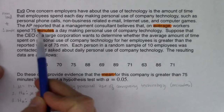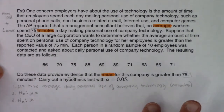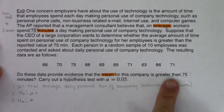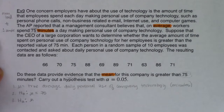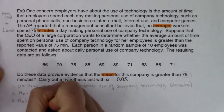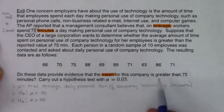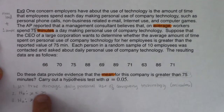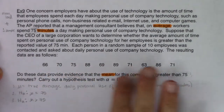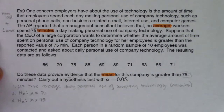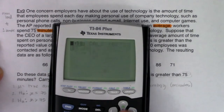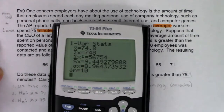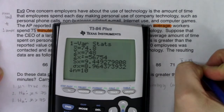Steps two and three — null and alternate. The claim is 75 minutes; that's the status quo. So the null is mu equals 75. The CEO wants to know if it's greater than 75 minutes, so the alternate is mu greater than 75. My sample mean, from the calculator, was x-bar equals 74.8 minutes — it's a statistic hidden in the raw data. Looking at that, I'm leaning toward the null being true — a difference of 0.2 minutes could easily be due to chance.